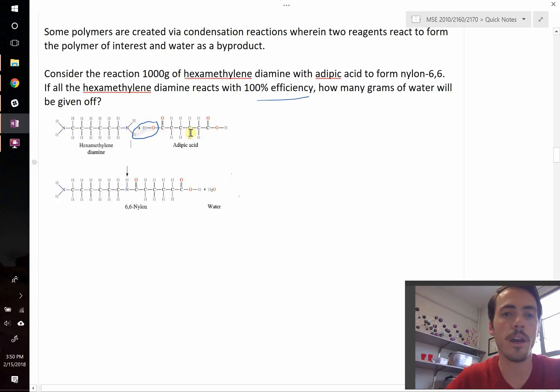Therefore, for every 1 hexamethylene diamine and 1 adipic acid molecule, you will form 1 molecule of nylon-6-6. And again, it gets its name by the fact that it has 1, 2, 3, 4,